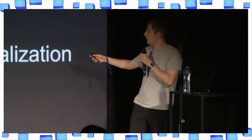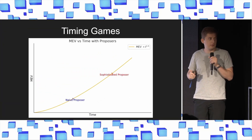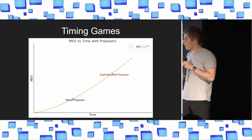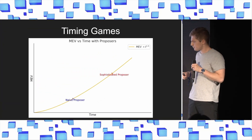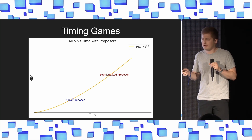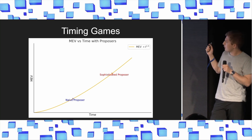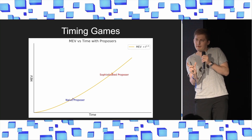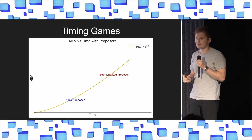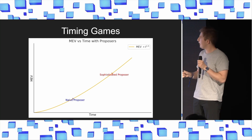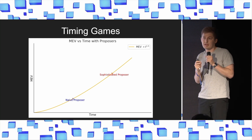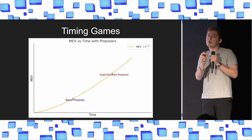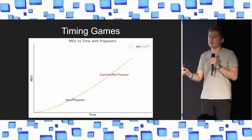The other problem is a centralization problem, and this is a very nuanced problem. I want to talk about timing games briefly. There's really interesting work by Fahad and others on it. The basic idea is that the longer amount of time you have to exploit MEV, the more MEV you can exploit. In fact, MEV scales proportional to the amount of time to the power of 1.5 — monotonically increasing super-linearly.